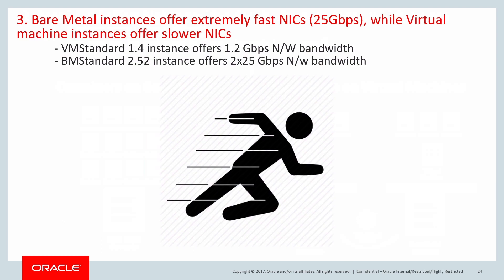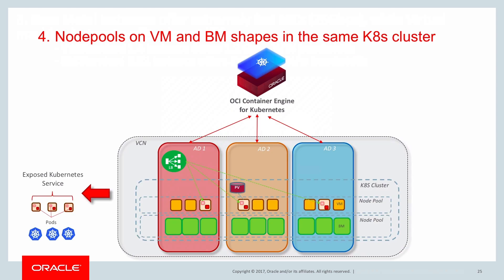Third, bare metal instance shapes come with extremely fast NICs. A BM standard 2.52 instance has two 25 Gbps NICs, while virtual machine shapes offer slower NICs — in our demo, the VM standard 1.4 shape offers 1.2 Gbps of network bandwidth, though bandwidth does scale linearly as virtual machine instance size grows. Lastly, OCI Container Engine for Kubernetes is the only managed Kubernetes offering in the public cloud that lets you create a node pool of bare metal instance shapes. As shown in this demo, you can use Kubernetes labels to intelligently route high-performance workloads to bare metal node pools and the rest to virtual machine node pools.